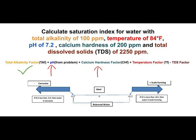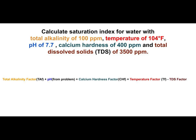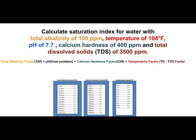Now let's do another example of saturation index. Calculate the saturation index for water with a total alkalinity of 100 ppm, a temperature of 104 degrees Fahrenheit, a pH of 7.7, a calcium hardness of 400 ppm, and total dissolved solids (TDS) of 3,500 ppm. We'll circle the formula: total alkalinity factor plus pH factor plus calcium hardness factor, and fill it in.